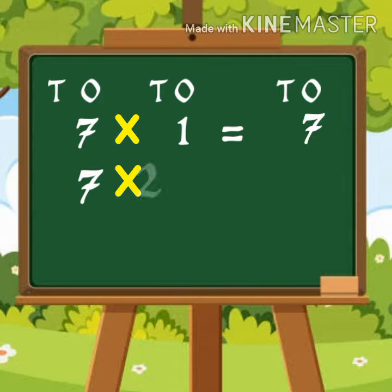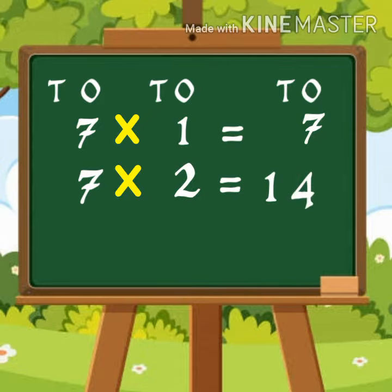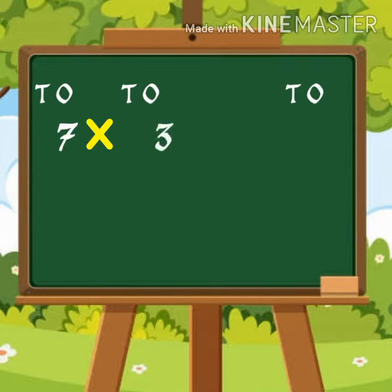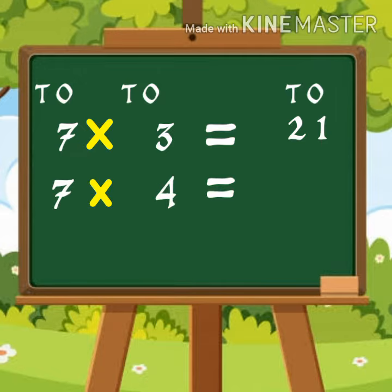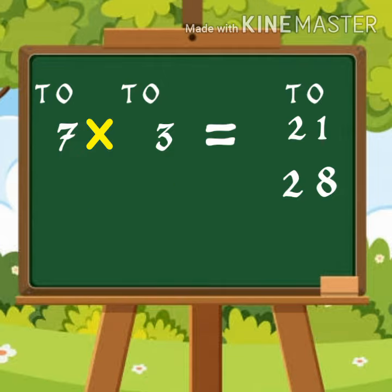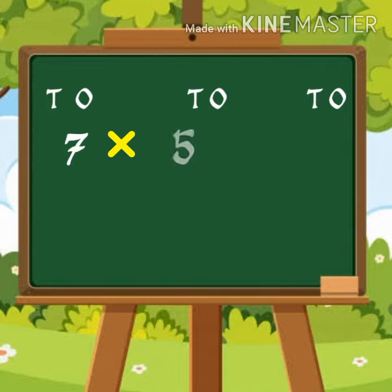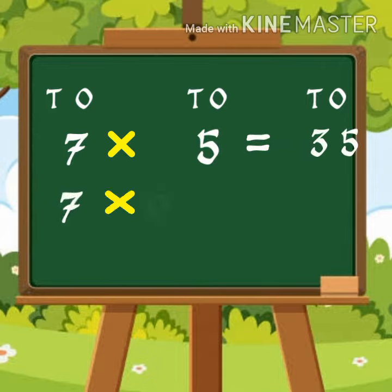Seven twos are fourteen. Seven threes are twenty one. Seven fours are twenty eight. Seven fives are thirty five. Seven six are forty two.